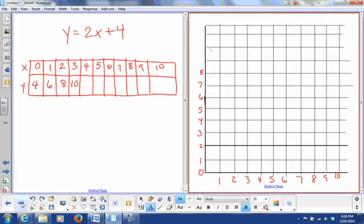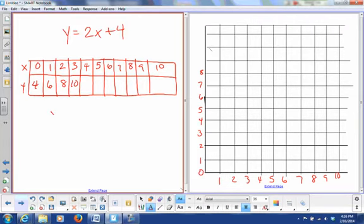So I've got my equation here where y equals 2x plus 4. So for instance, let's take 3. So y is going to equal 2 times 3 plus 4, which is 6 plus 4, which equals 10. Okay, so we get this number right here.